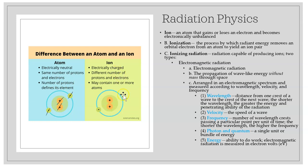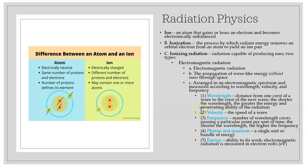In an ion, there is a charge. A positively charged ion has more positive than negative charges. When we have radiation, there is ionization happening where there is a charge. To measure radiation, we look at wavelengths — the distance from one wave to the next.